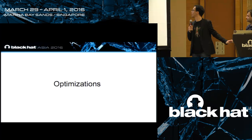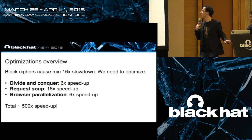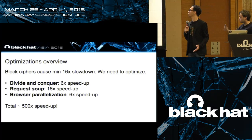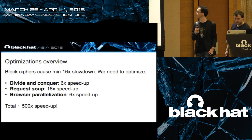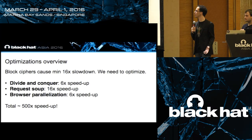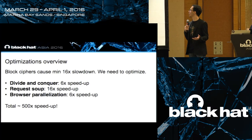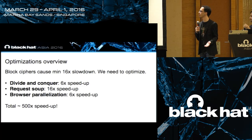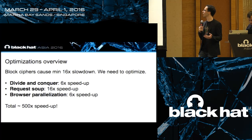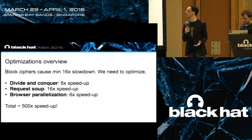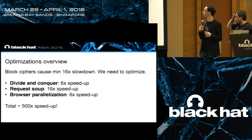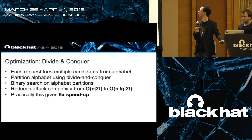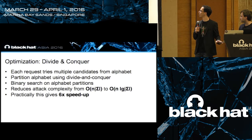Let's move on to our optimizations to bypass these problems. We have proposed three optimizations. The first is the divide and conquer technique. The second is the request soup. The third is browser parallelization. Block ciphers of 128 bits like AES cause a 16 times slowdown, so these techniques should result in a 500 times speedup theoretically.